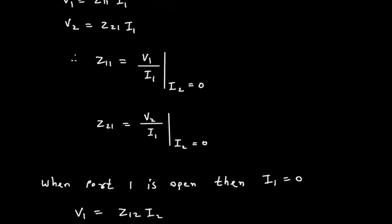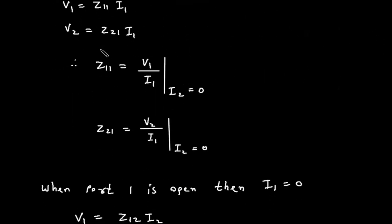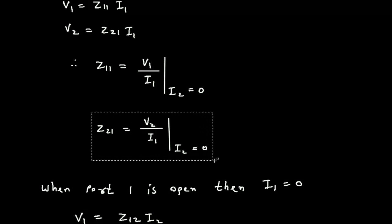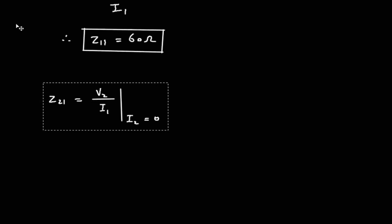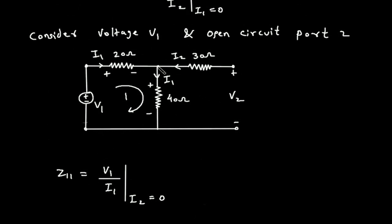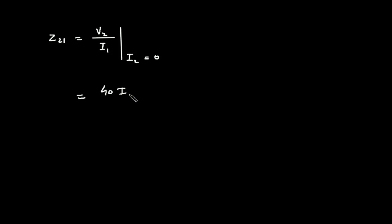When we are open-circuiting port 2, we can also find Z21. Z21 is equal to V2 by I1. Here in this circuit, V2 is the voltage across this 40-ohm resistor, because the 30-ohm resistor is open-circuited. So V2 is equal to 40·I1, and dividing by I1, Z21 is equal to 40 ohm.